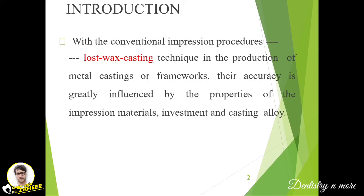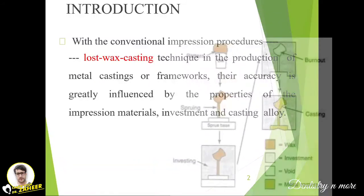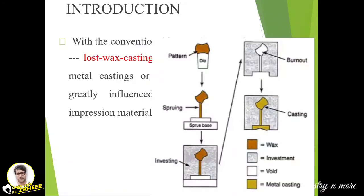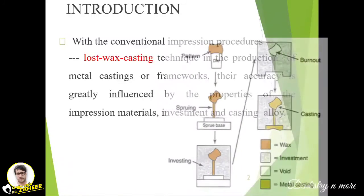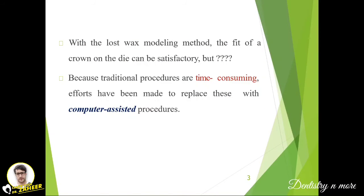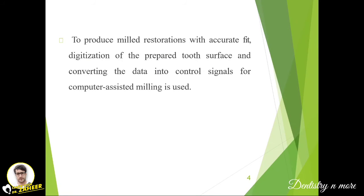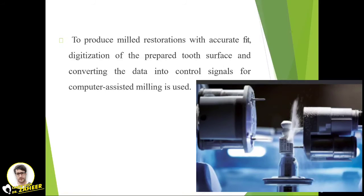Conventionally we were using the lost wax technique. In the production of metal castings or frameworks, accuracy is greatly influenced by the properties of the impression materials, investment, and casting. This is a method of metal casting in which a molten metal is poured into a mold created by means of a wax model. Once the mold is made, the wax model is melted and drained away. With the lost wax modeling method, the fit of a crown on the die can be satisfactory, but there are chances of errors and it is time-consuming. In order to replace this time-consuming error-prone method, we use computers — that is CAD CAM.